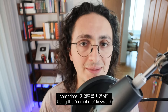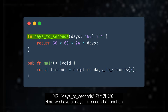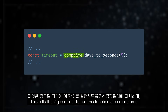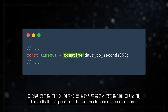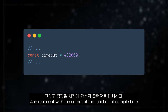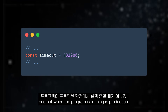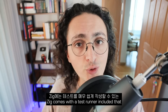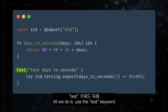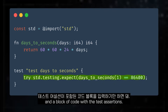Using the comptime keyword, we can make Zeek run code only at compilation time. Here we have a days to seconds function that we are calling with the comptime keyword. This tells the Zeek compiler to run the function at compile time, replacing the line with the output of the function rather than running it in production. Zeek also comes with a test runner included, making it very easy to write tests. All we do is use the test keyword followed by the name of the test and a block of code with the test assertions, then run the Zeek test command.